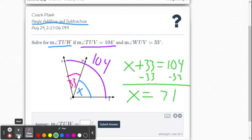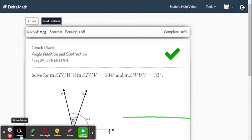Then we enter that answer into DeltaMath. You just put the number, it already has the degree symbol for you. So you type in 71, submit it, and we get the check mark.